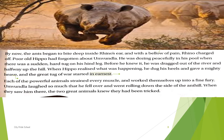Each of the powerful animals strained every muscle and worked themselves up into a fine fury. They were both pulling from each side, not aware of what was happening — they had only talked to Umundla but didn't realize he had set them against each other. Umundla laughed so much that he fell over and went rolling down the side of the ant hill. When they saw him there, the two great animals knew they had been tricked. Until then they were not aware — they had just been pulling hard.